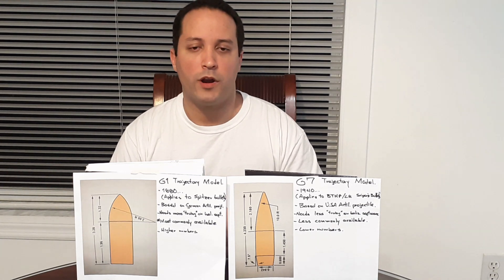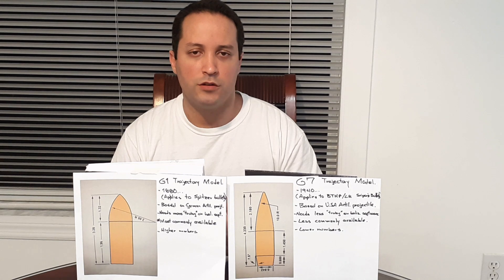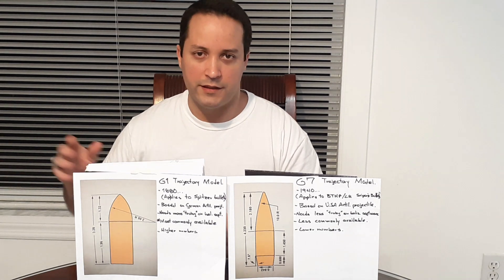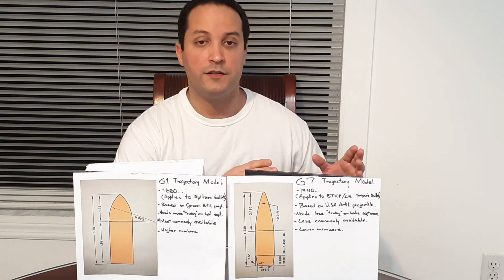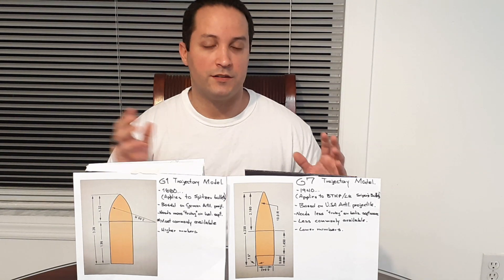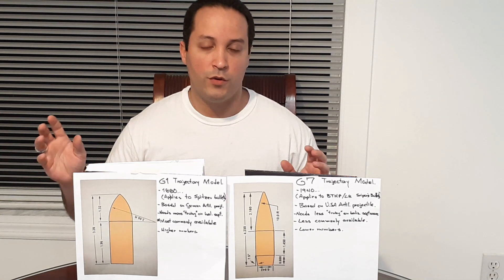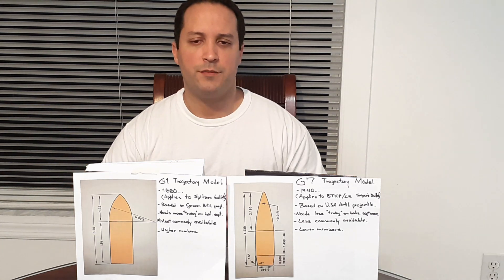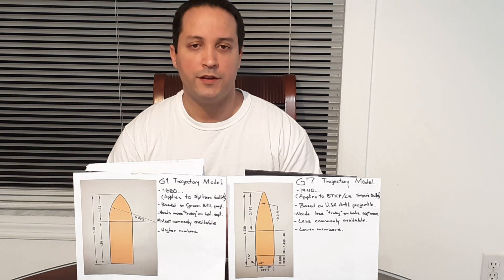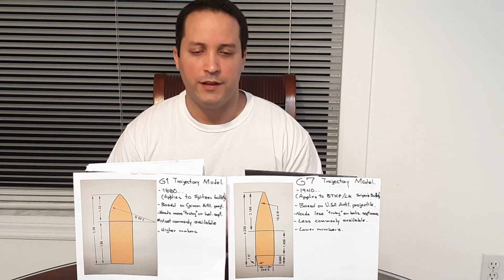The G1 is going to need more truing, more verification and confirmation of what you get at the range, real life performance versus what the ballistic software table tells you. G7, since it is more modern, is going to need less truing.